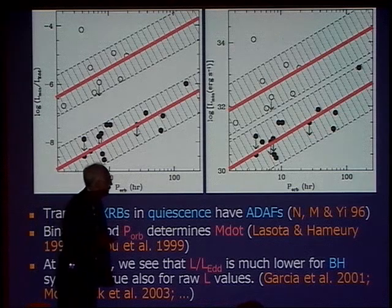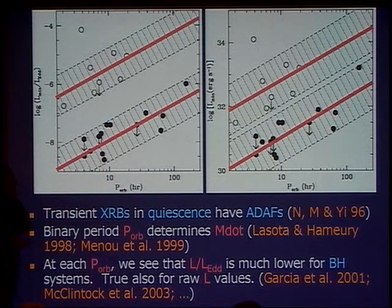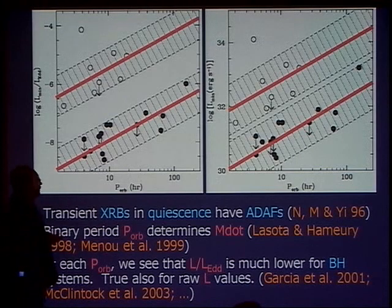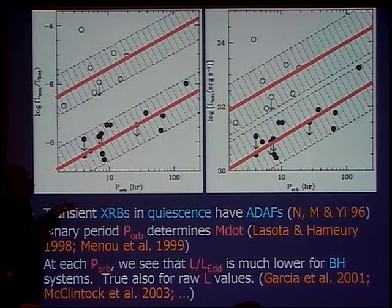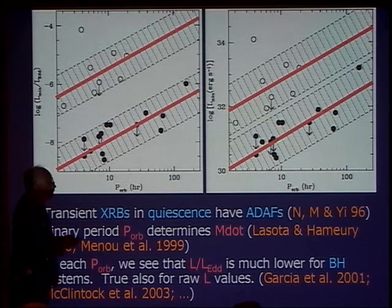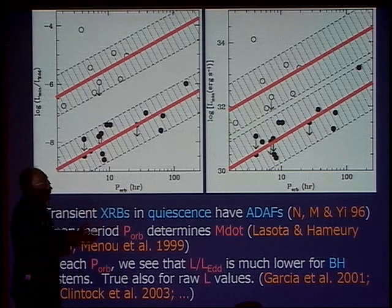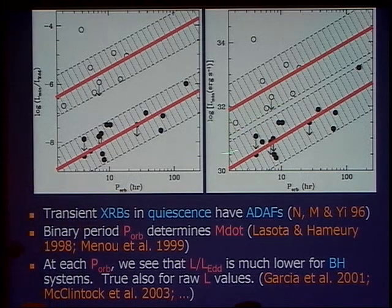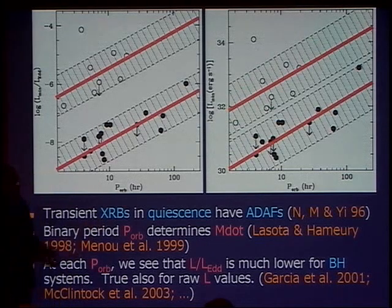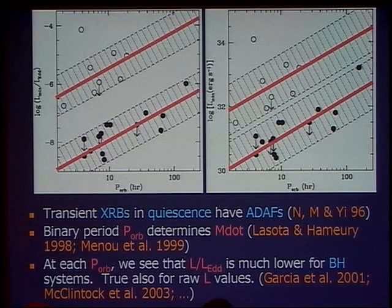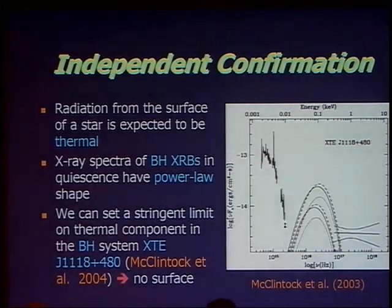There are one or two neutron stars that may be a little dimmer. Andy was reminding me of system 1905 — its luminosity seems to be just marginally below, but we don't know its orbital period. Somebody should go measure it. If it turned out to be 20 hours and it sat in the black hole region, we'd be in an embarrassing situation. But I predict — and my co-authors will agree — the period is probably one and a half to two hours, placing it right in the neutron star band. These are all the systems; there's no data selection. Every system for which we have luminosities and orbital periods is included. That's the first test, and it's become really good.